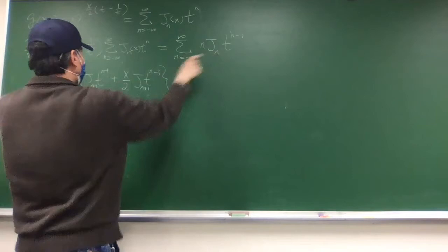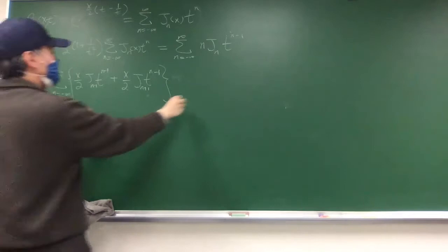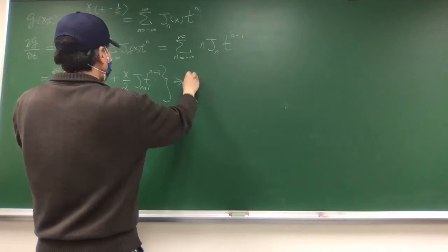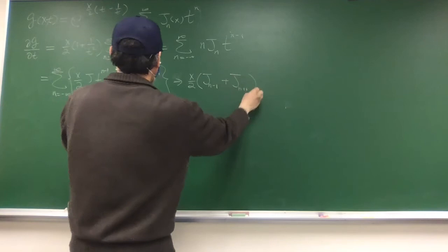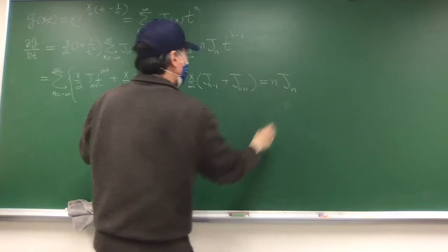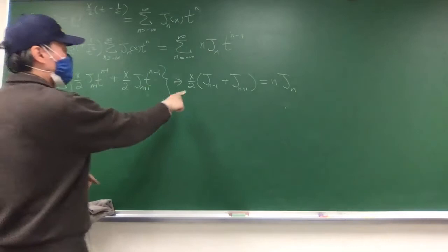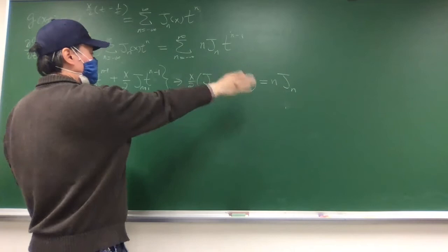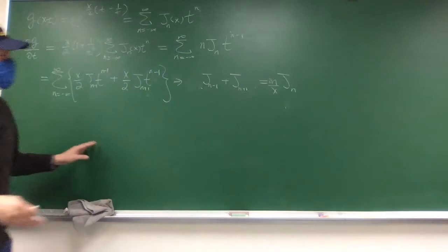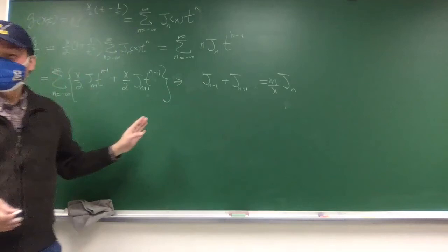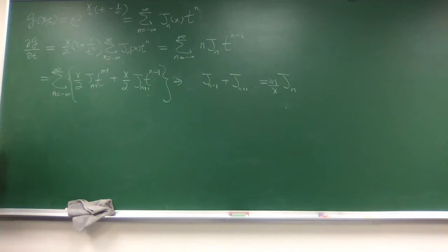Now all terms are in terms of t to the power n minus 1, so we can equate coefficients. This gives: x over 2 times (J_{n-1} plus J_{n+1}) equals n. Rearranging, this becomes 2n over x equals J_{n-1} plus J_{n+1}, either form is fine.